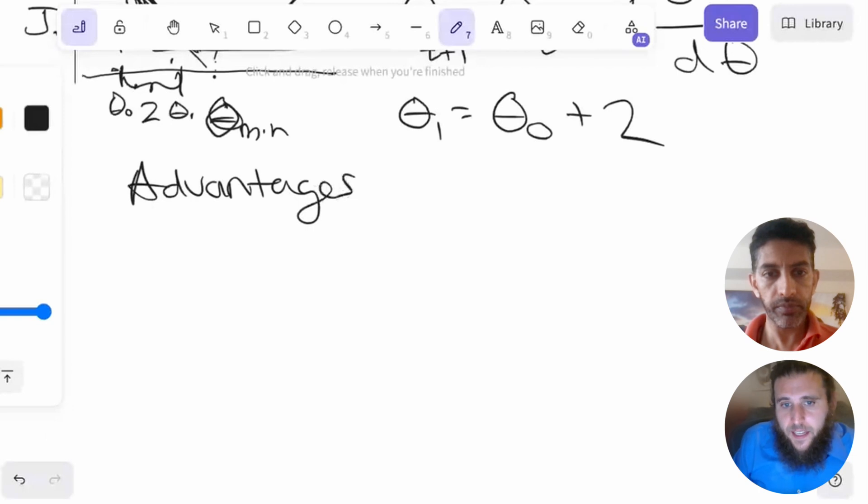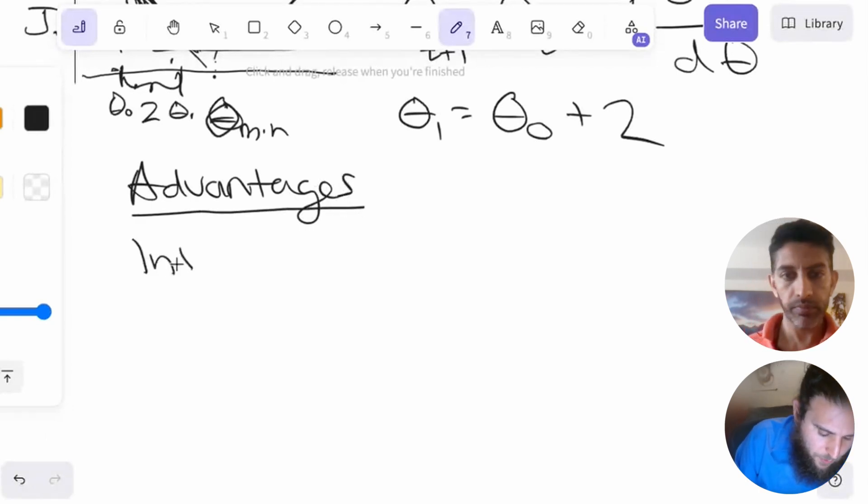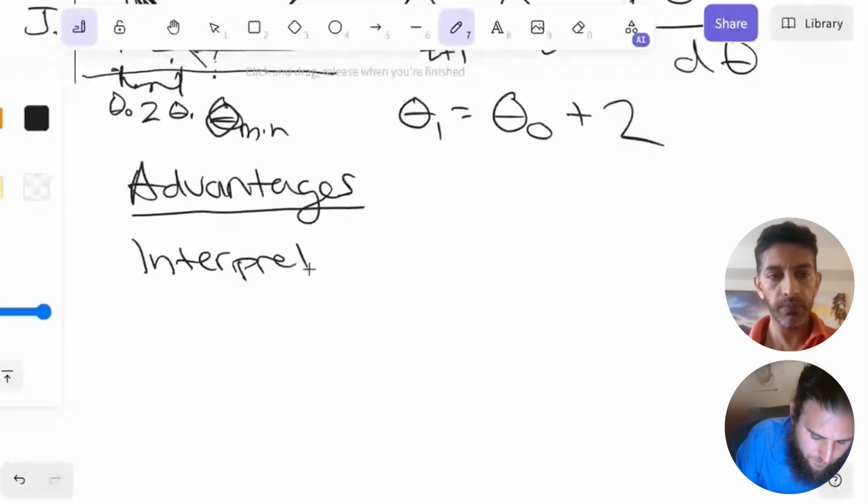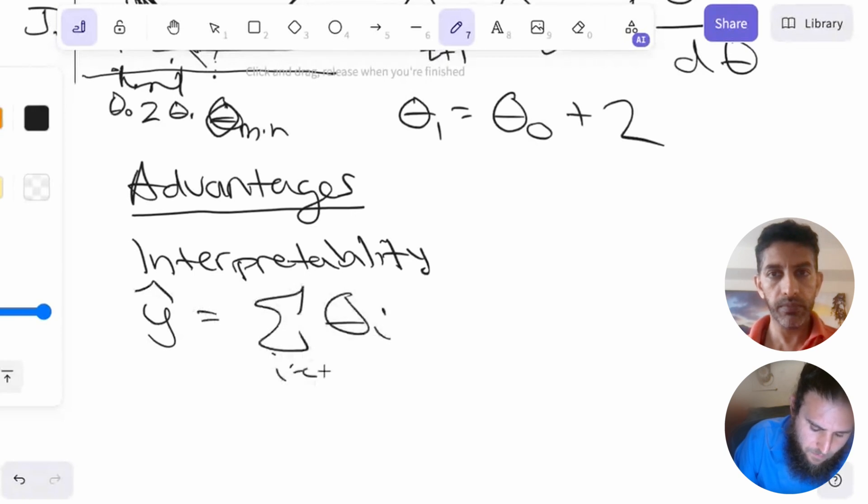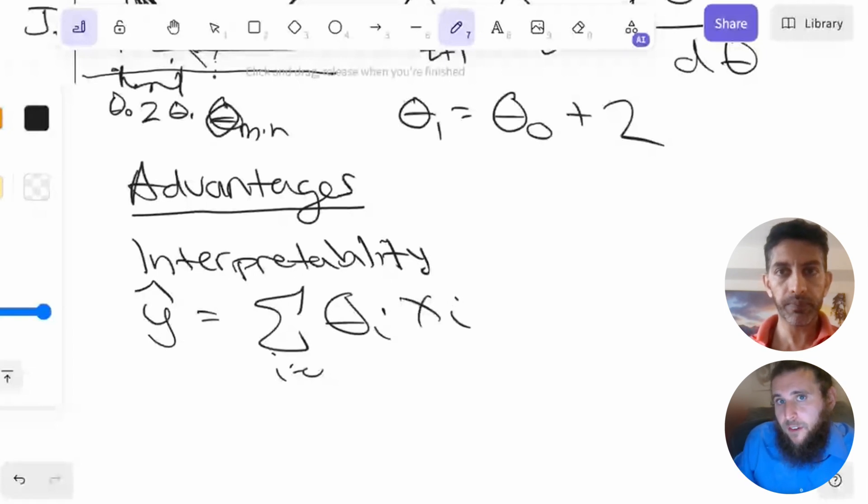Probably the biggest advantage of linear regression over other models is going to be interpretability. So what does this mean? As we've already seen, linear regression has this formula that goes with it, right? Our y hat equals theta times x. So it's literally just summing up all of our different variables times some coefficients. We're able to see what is the effect of an individual coefficient on a target. This allows us to both make large explanatory claims about the effect of a feature on a target, as well as allowing us to diagnose potential problems with our regression.